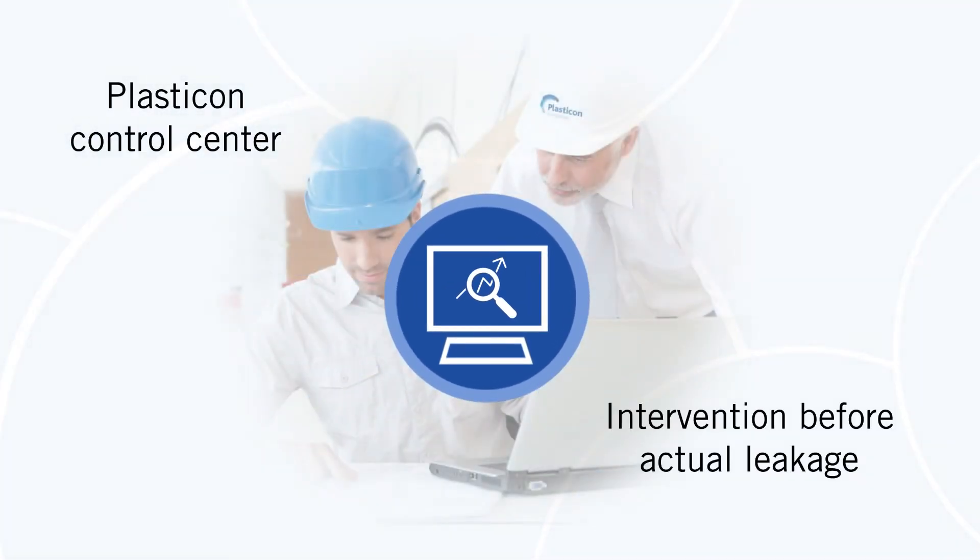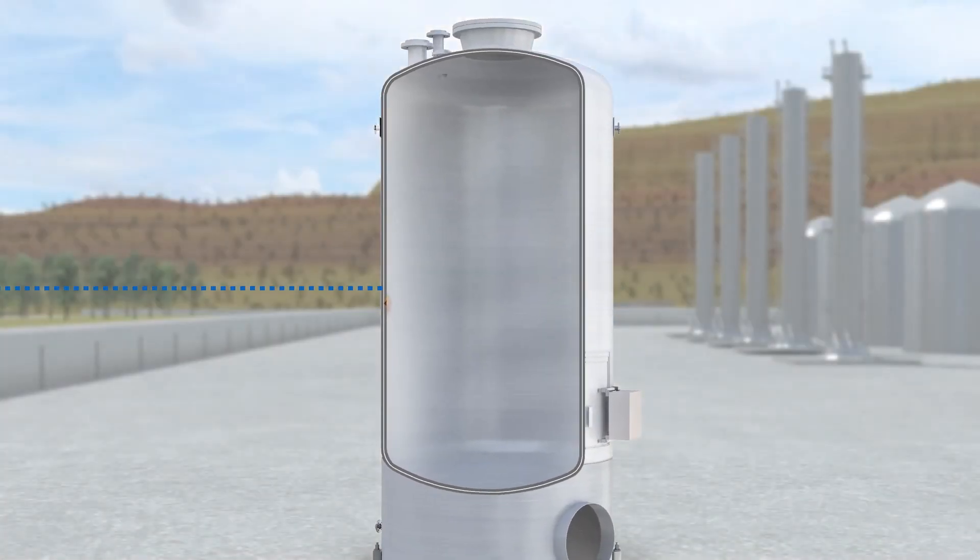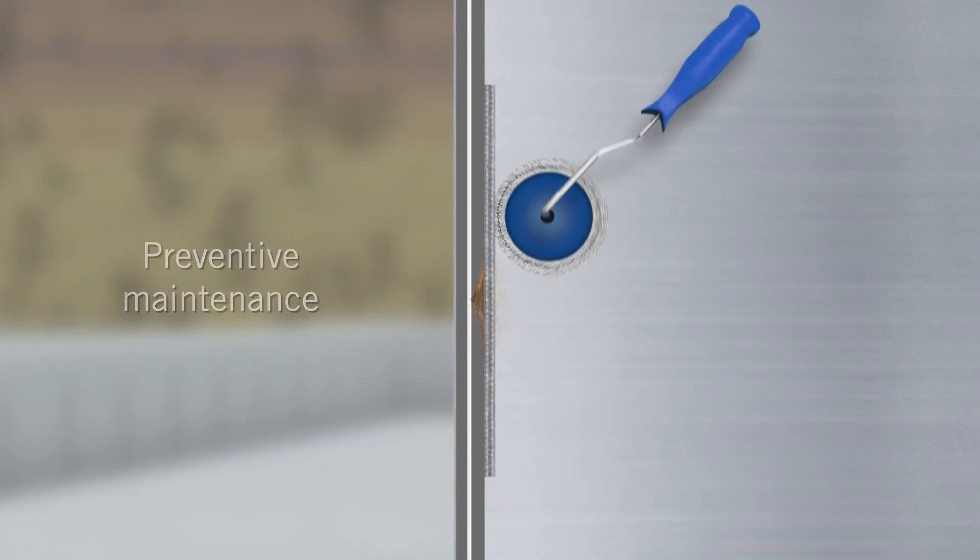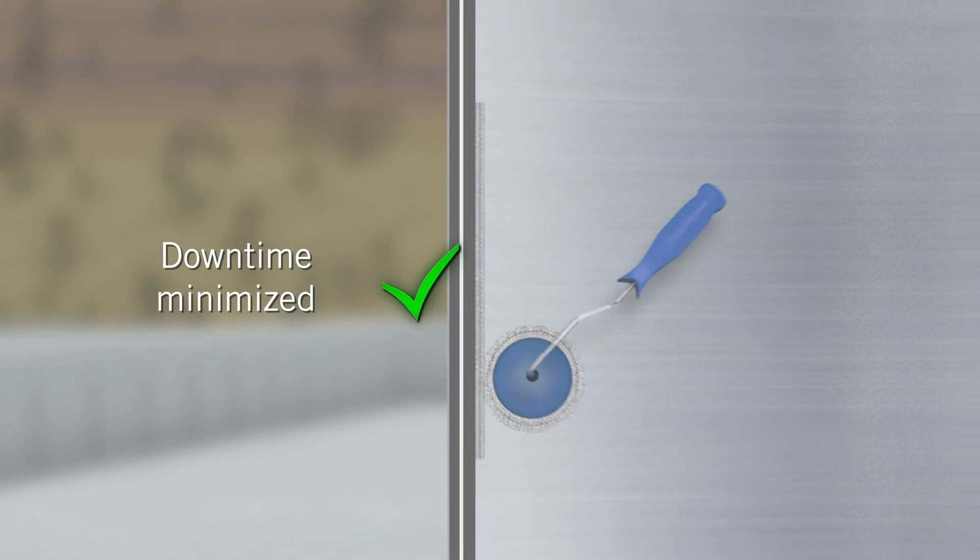Intervention initiated by the LMS will occur before the actual leakage takes place. Maintenance or repairs are pre-emptive and downtime can be minimized or more likely even prevented.